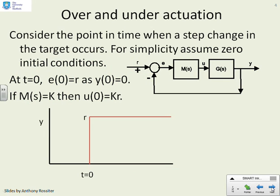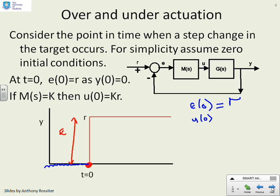Over and under actuation: we'll consider what happens when a step change in the target occurs. The step change occurs at a particular point, and at that point this will be the error. If the output is chugging along at zero, then at the point the target changes, you have an instantaneous error e(0) equals r, because y(0) is zero. Therefore you're going to have an instantaneous input u(0) equals k times r. The integral won't have done anything at that initial point.